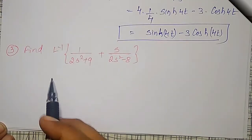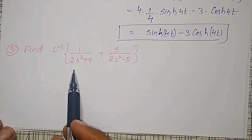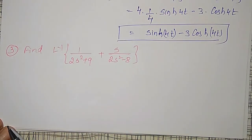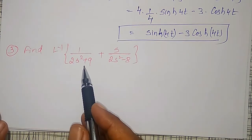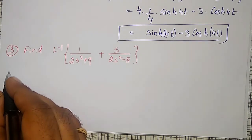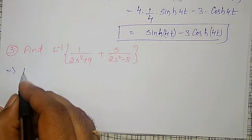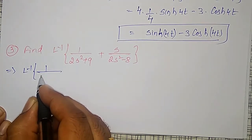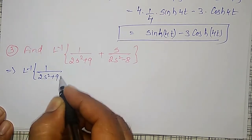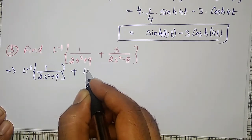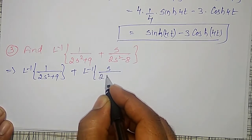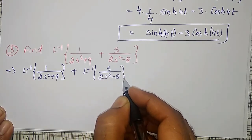Next, another simple example. In the next example, the denominators are not in the standard forms, but we can convert them into standard forms. First, it is addition of two terms, so using the linear property I can separate them: inverse Laplace transform of 1/(2s² + 9) plus inverse Laplace transform of s/(2s² - 8).